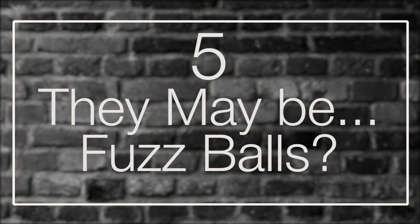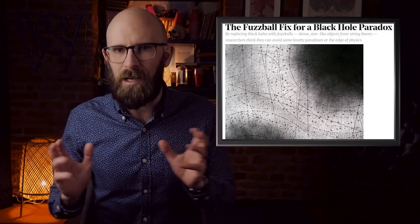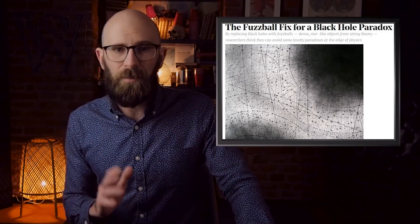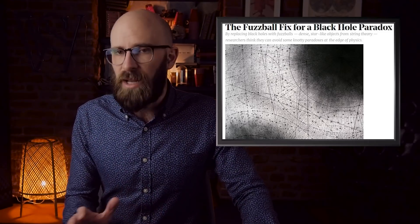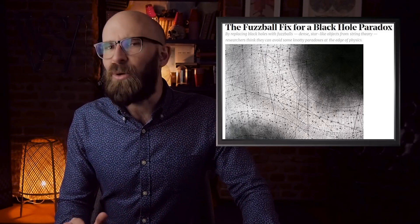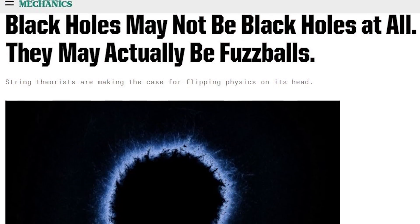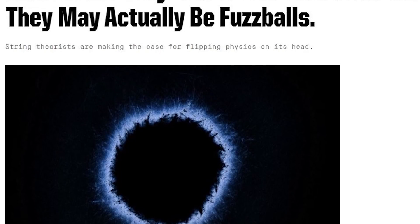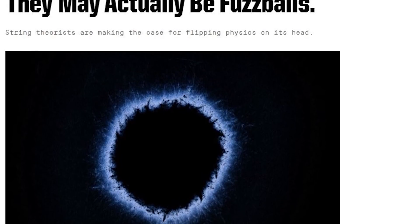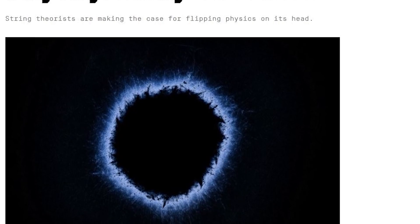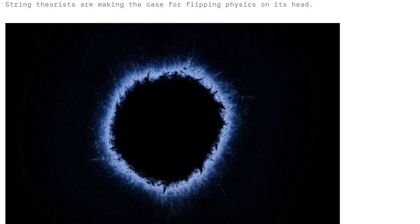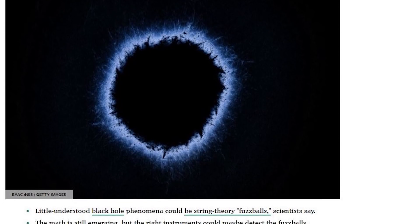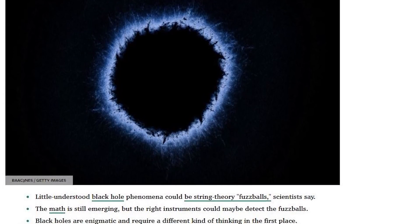Number 5: They May Be Fuzz Balls. String theory is really weird. And one hypothesis that string theorists often bring up is the idea that black holes are not black holes at all, but rather balls of yarn. This is most likely a metaphor, but another comparison would be to imagine if all matter in the universe is made up of quantum strings, as string theory suggests, and we envision those strings as, say, rats, then black holes would be like a rat king, a collection of rats that have their tails fused together, with all of those precious strings fused into one ball of fuzz.